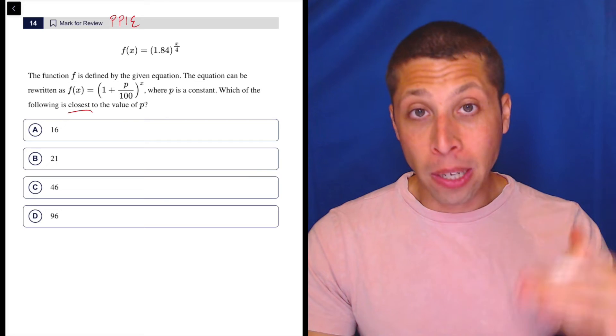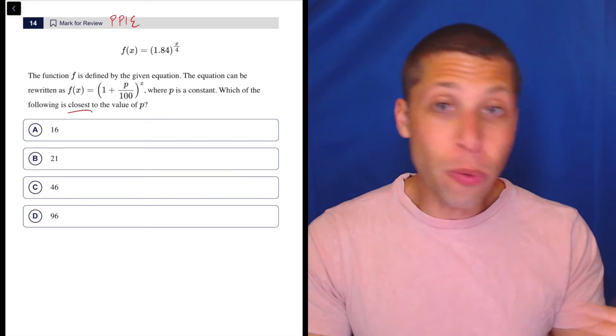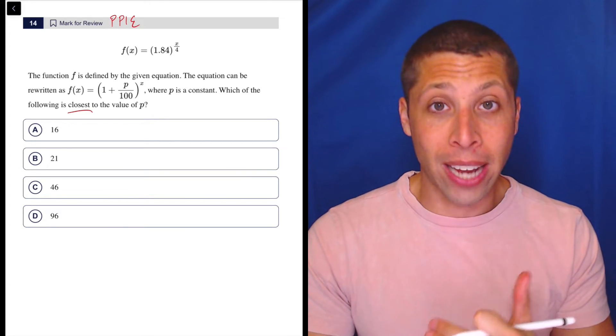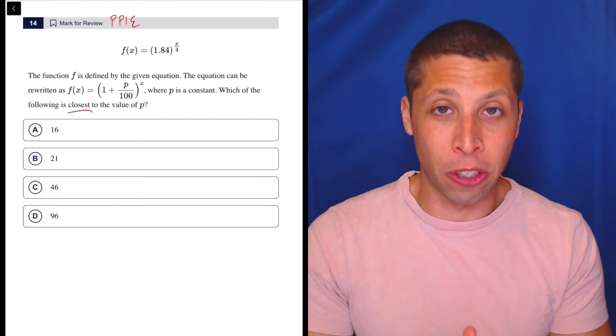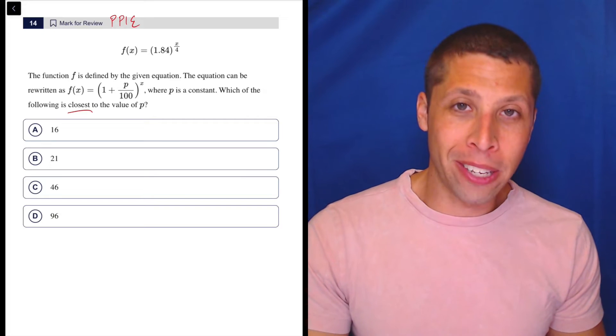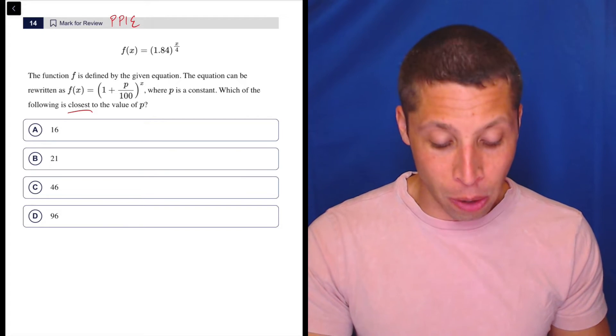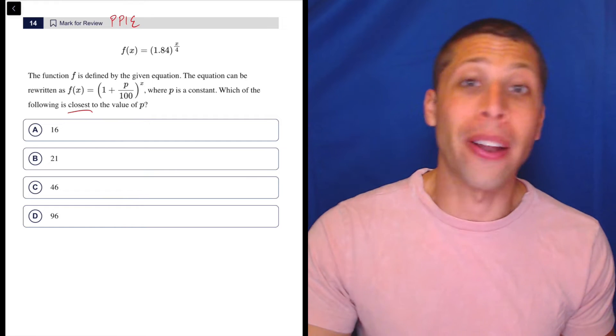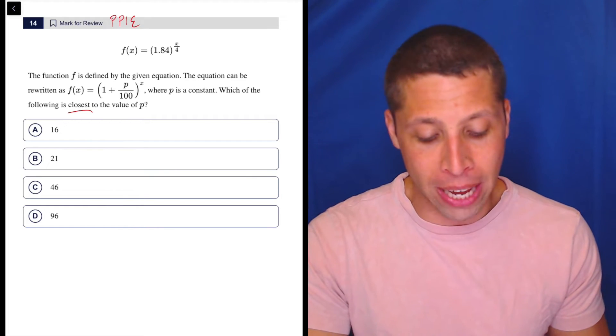So in this case, I'm going to just pick a value for x, see what number that gives me for f of x, and then see if I can get the same number from different versions of p. So I would love to pick zero, but I also know how these kinds of equations work. And I know that zero is going to basically wipe out everything and then it won't matter what p is. So I need it to be something else.